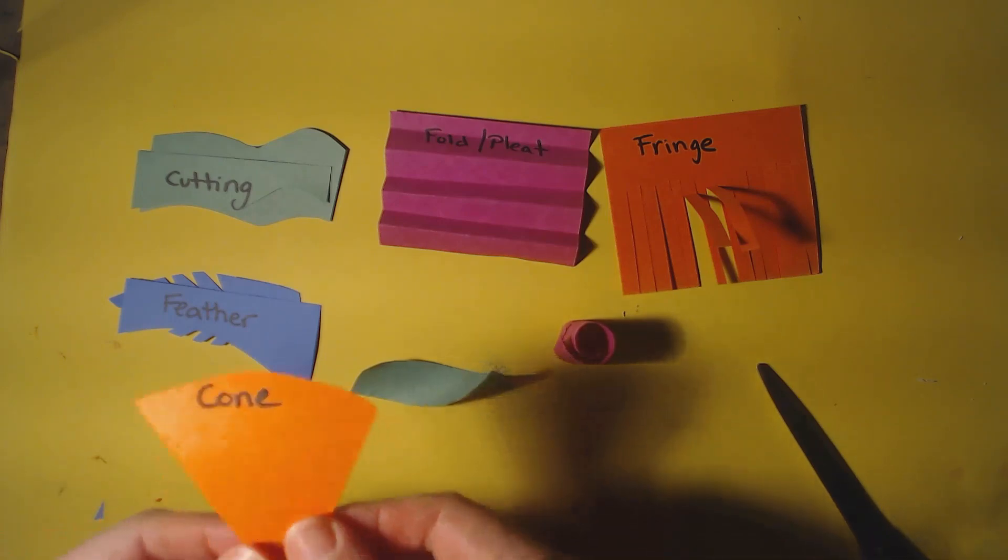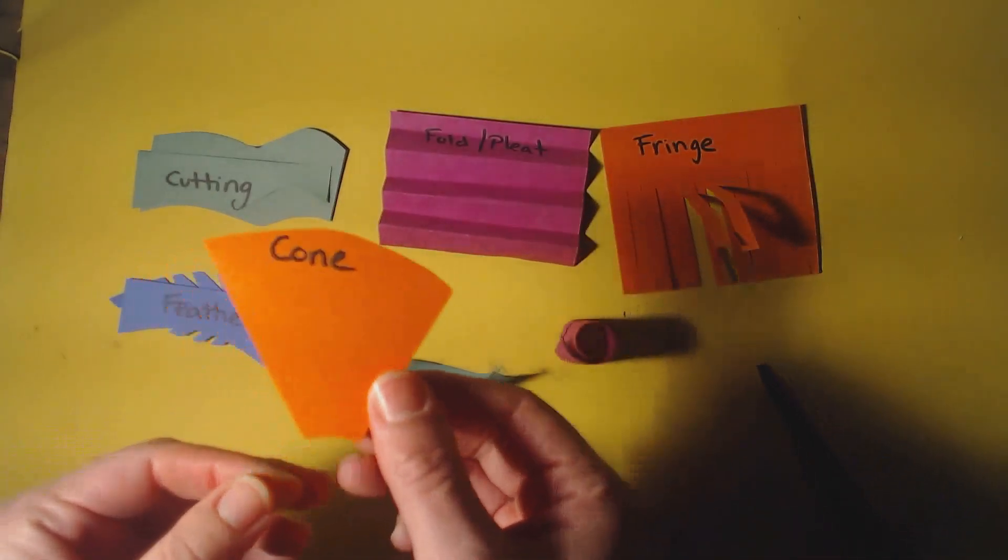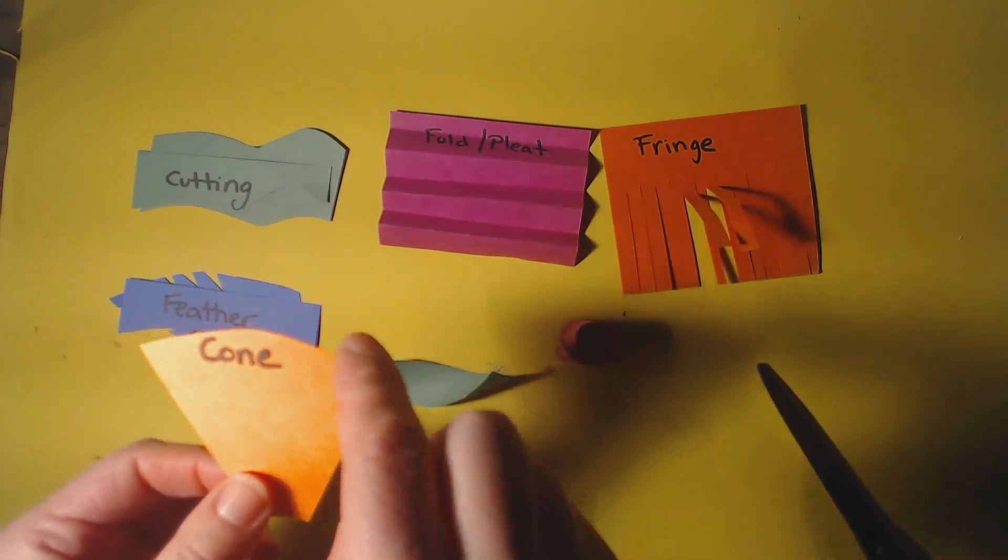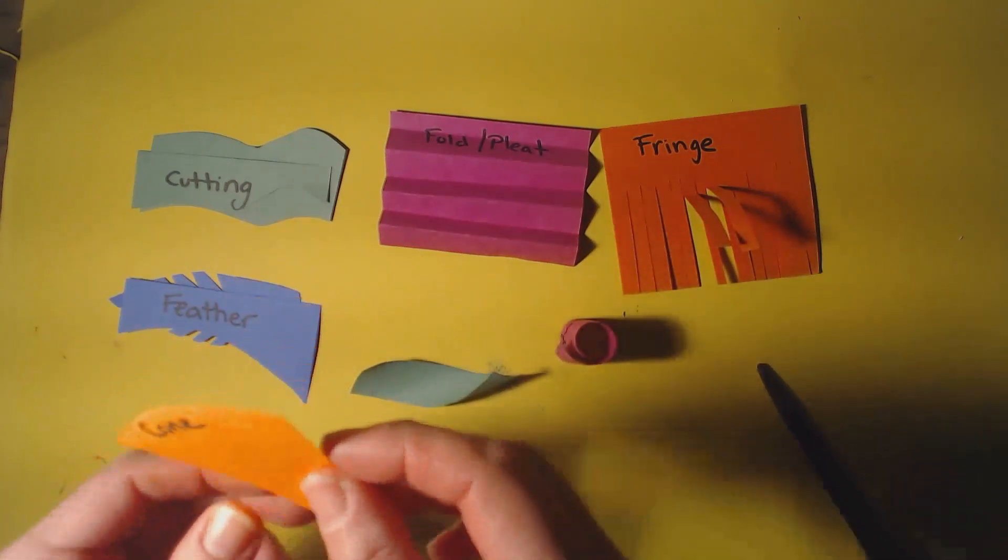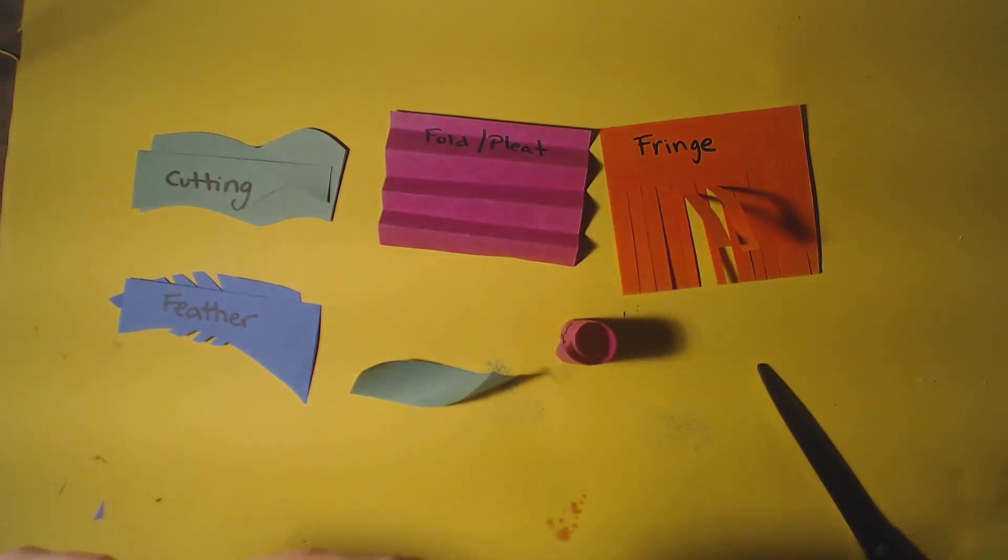And there's the cone. So the cone I cut into kind of a triangle shape except the top is curved and the bottom is curved. You're going to roll it just like you did before with the roll one. And what you get is a nice little cone shape. Now you might have to use a stencil to get it exactly right.